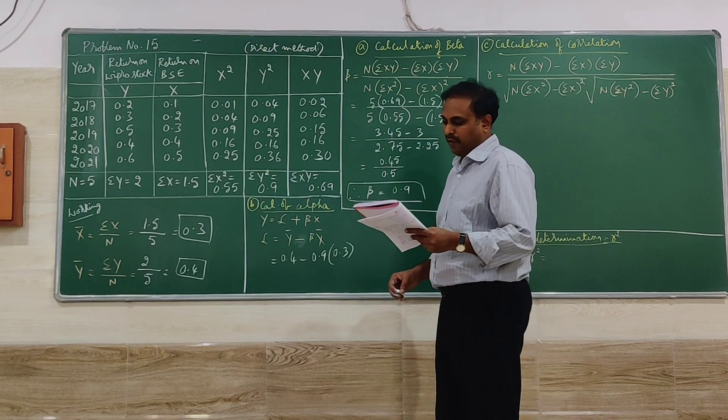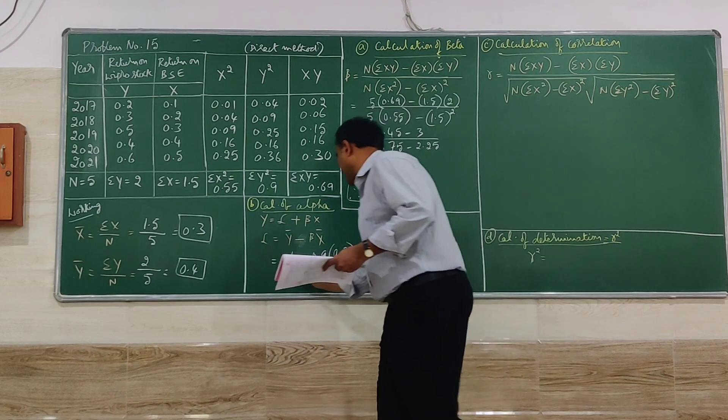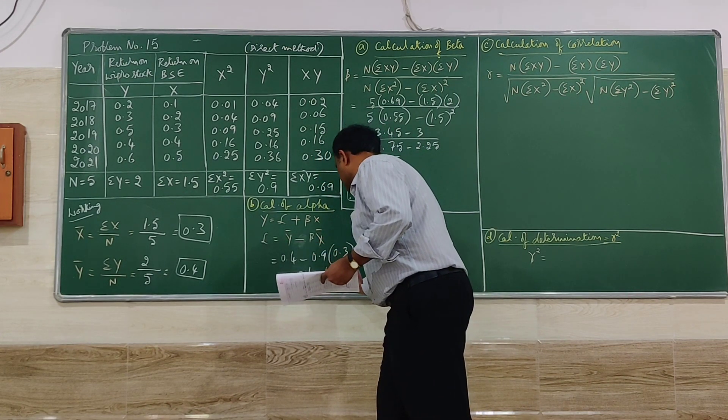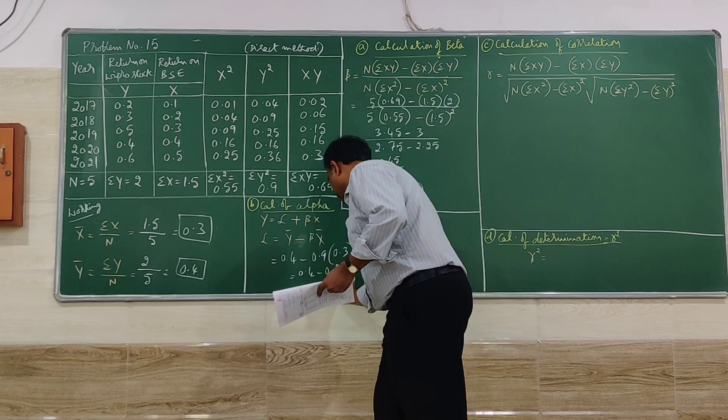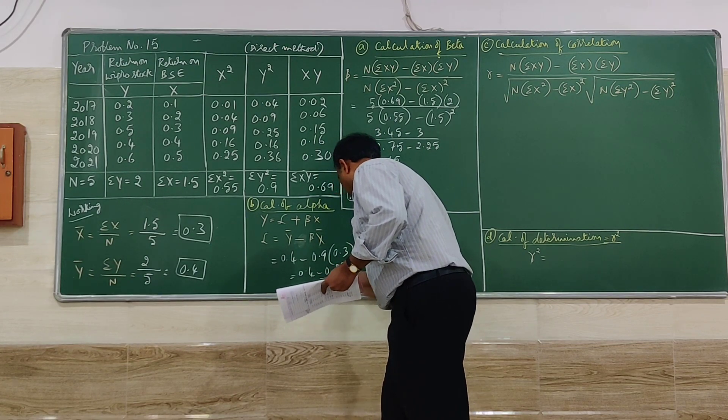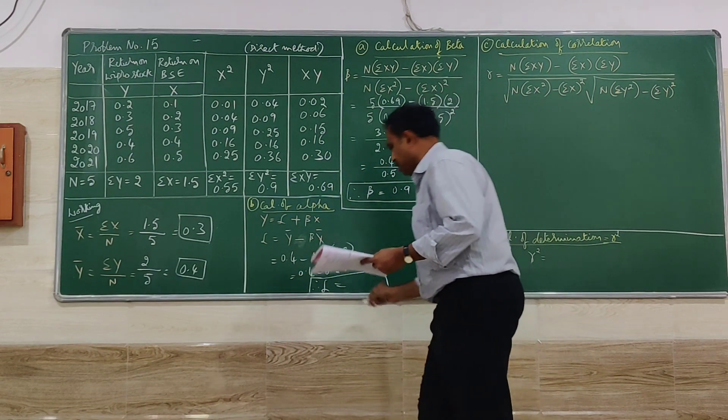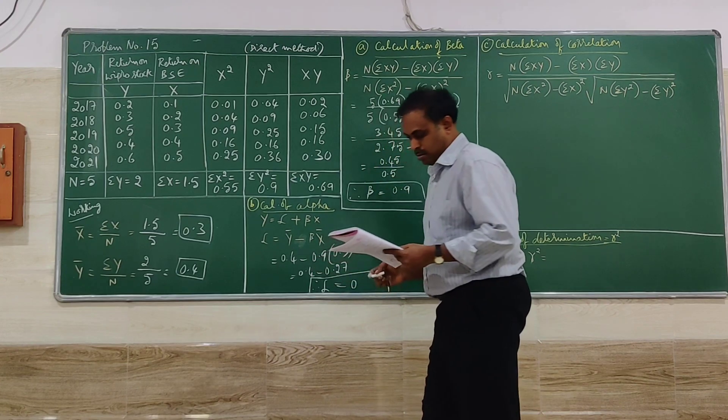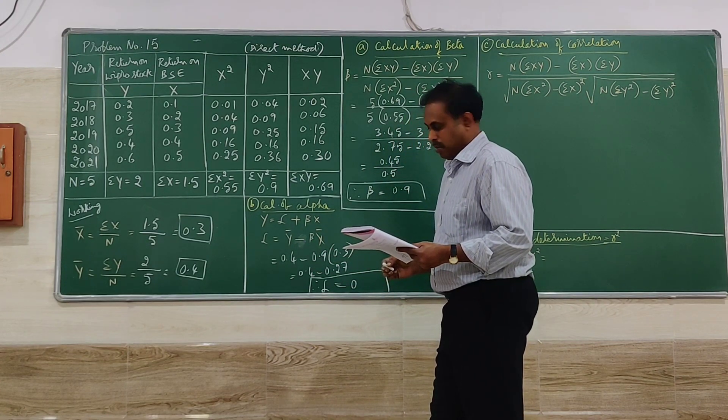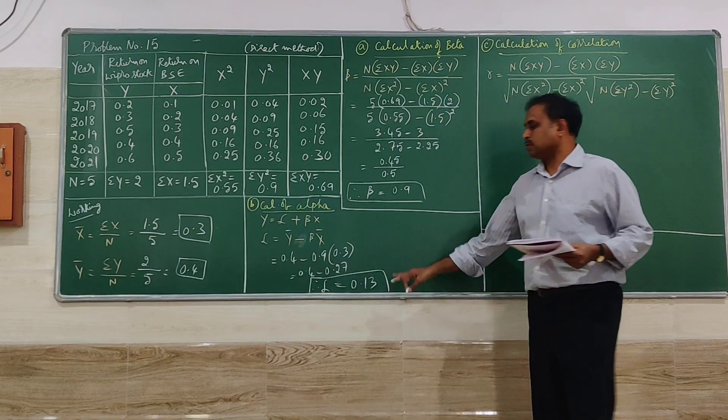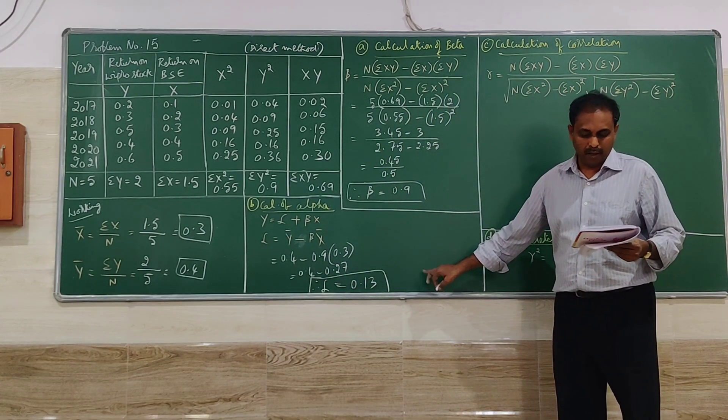So let us simplify and you will get the answer 0.4 minus 0.27. So alpha is equal to 0.13.